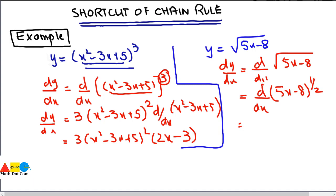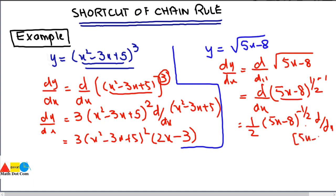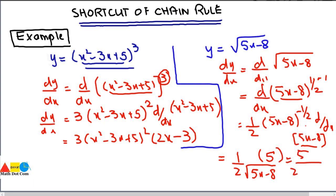Move the power 1/2 to the front, write the function as it is, and subtract 1 from the power: 1/2 - 1 = -1/2. Then take the derivative of the inner function 5x - 8, which is 5. With the -1/2 power in the denominator, we get 5 over 2√(5x - 8). This is the derivative using the shortcut — no need for the full chain rule method.